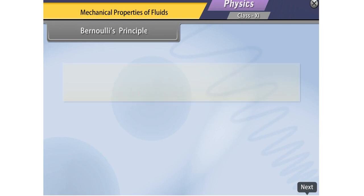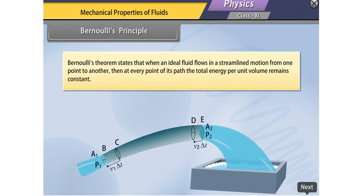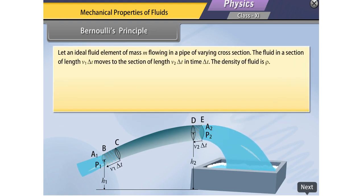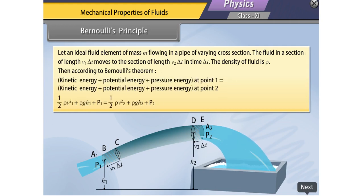Bernoulli's theorem states that when an ideal fluid flows in streamlined motion from one point to another, then at every point of its path, the total energy per unit volume remains constant. Consider an ideal fluid element of mass m flowing in a pipe of varying cross-section. The fluid in a section of length v1Δt moves to a section of length v2Δt in time Δt. The density of the fluid is rho. According to Bernoulli's theorem, the sum of kinetic energy, potential energy, and pressure energy at point 1 equals the sum at point 2.